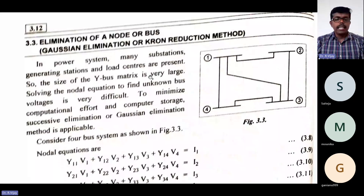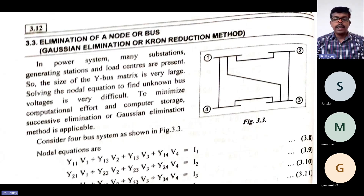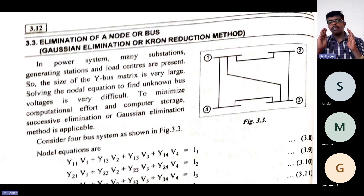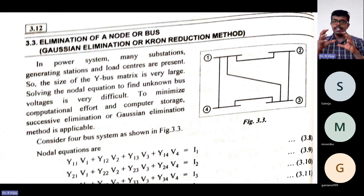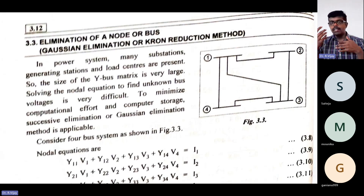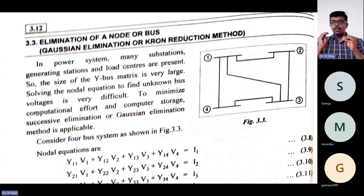Good afternoon. Today we are going to see the elimination of a node or bus by using the Dorf Elimination or Kron's Reduction Method. Here we are going to see more on the Kron's Reduction Method. There are some shortcut tips for solving this method. I will tell you those later, but first we are going to see how to formulate the Kron's Reduction Method and what is the formula for using it.